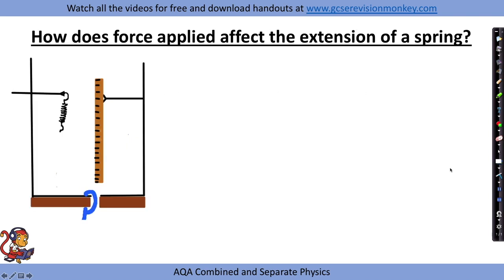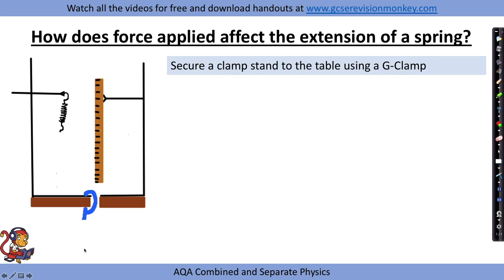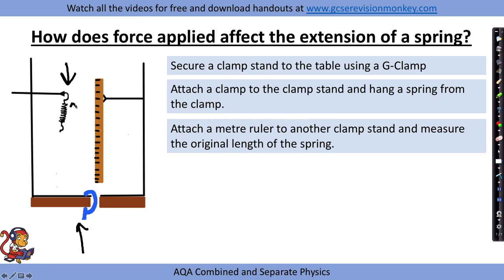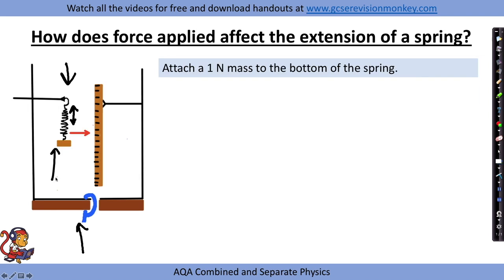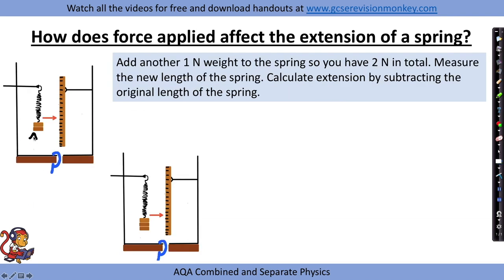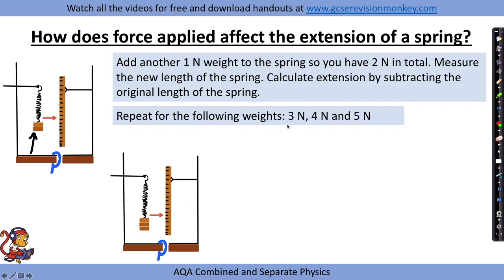In the springs practical, you investigate how the force applied to a spring affects its extension. Secure a clamp stand to the table using a G-clamp (to prevent toppling), attach a spring to the clamp, and measure the original length using a metre ruler on a second clamp stand. Attach a 1 newton mass, record the new length, and calculate the extension by subtracting the original length. Then add another newton weight — so 2 N total — and again calculate the extension. Repeat for 3, 4 and 5 newtons.